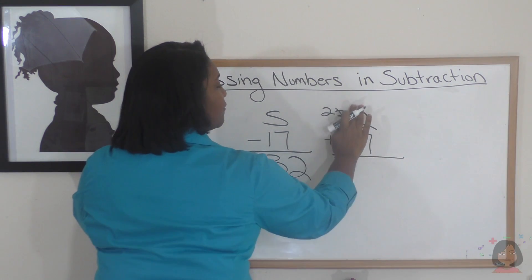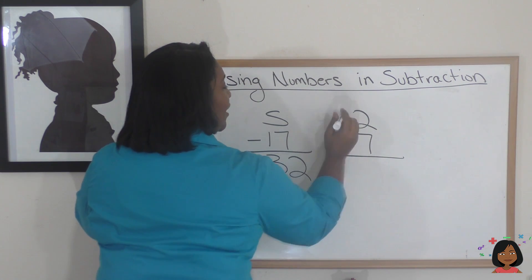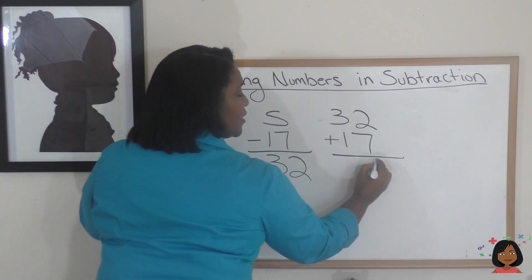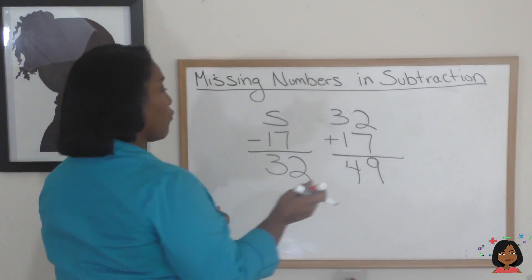Oops, I should be adding. I got confused. That happens sometimes. There we go. So, 7 plus 2 is 9. 3 plus 1 is 4. So, it tells us that our answer is 49.